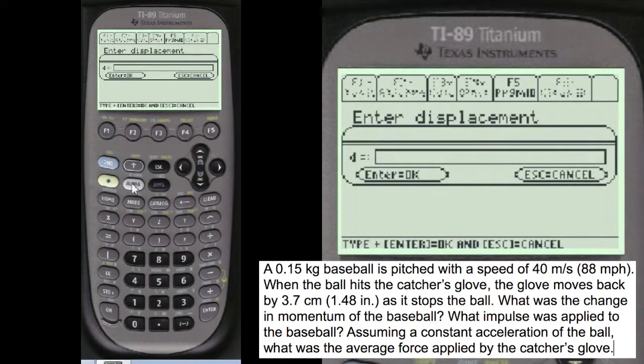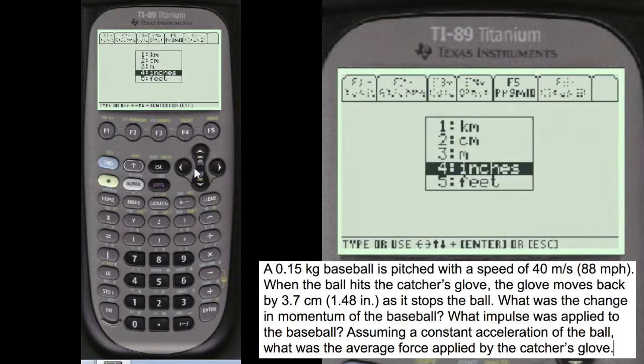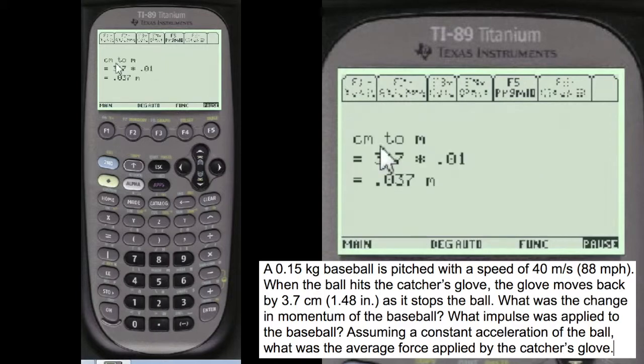And then the displacement, alpha 3.7. And they give centimeters for that. So that has to be converted. So centimeters to meters is this conversion here. So make sure you have to change everything to meters for these formulas to work, of course.